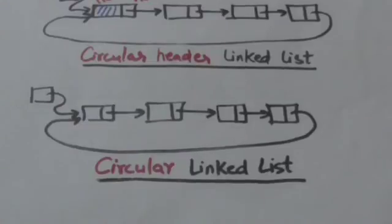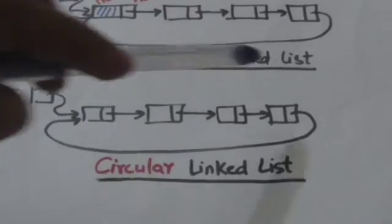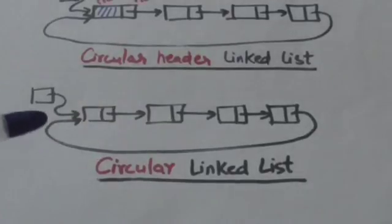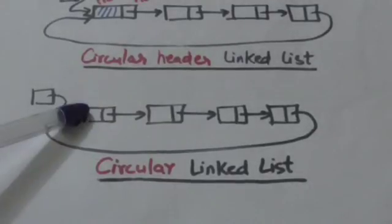Circular linked list is a linked list whose last node points to its first node.